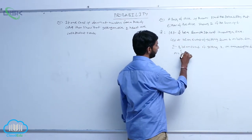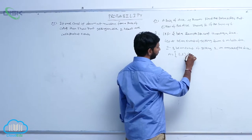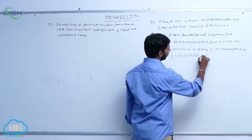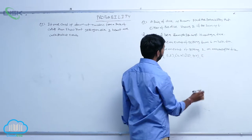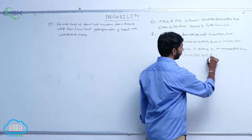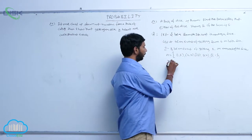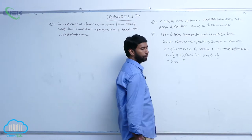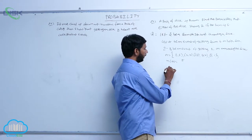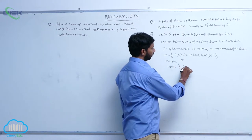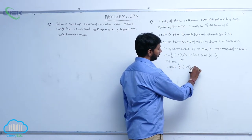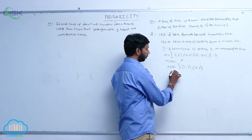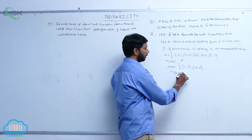Here, A equals the outcomes with sum 6: (1,5), (2,4), (3,3), (4,2), and (5,1). Therefore N(A) = 5. And A intersection B equals {(2,4) and (4,2)}, so N(A intersection B) = 2.